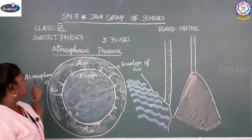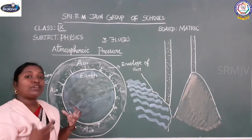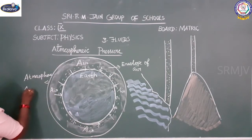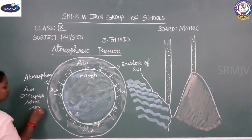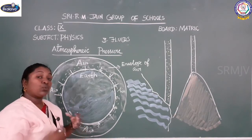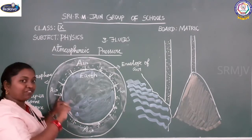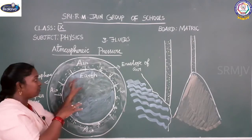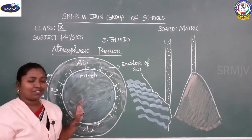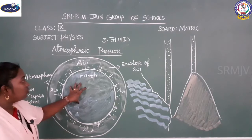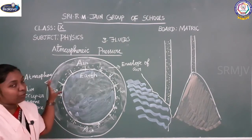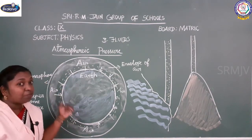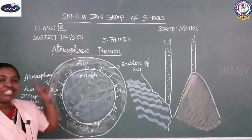The air occupies some space over here, which means it has weight. It will exert that force on the surface, so it will exert some pressure on the surface of the earth. That pressure is called atmospheric pressure.